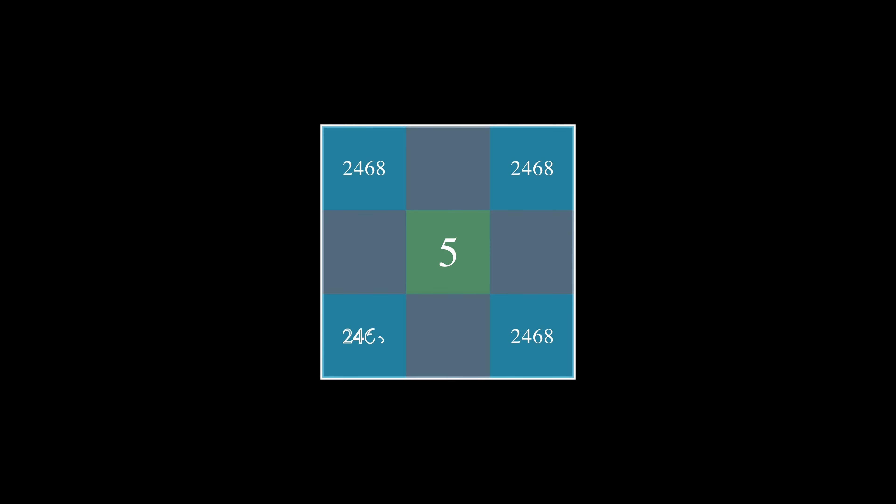The question is what parity is each color? We can use a column or row that does not pass through the center digit. Taking one such column, we have two blue squares and one gray square. For the column to sum to an odd number and reach 15, the gray squares must be odd and the blue squares must be even. We can now pencil mark in the possible options for every square. Every magic square is restricted to what we now have on screen — isn't it a beauty? We can't go further without knowing one more digit in the magic square.